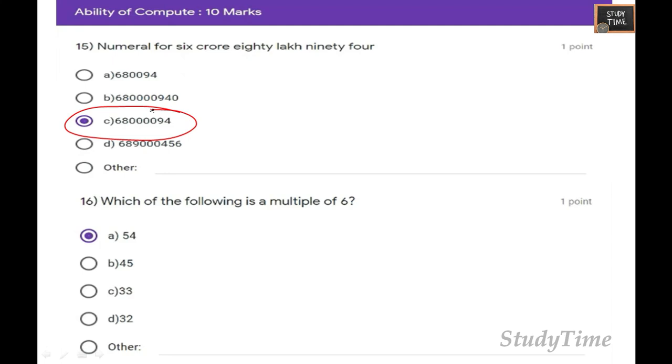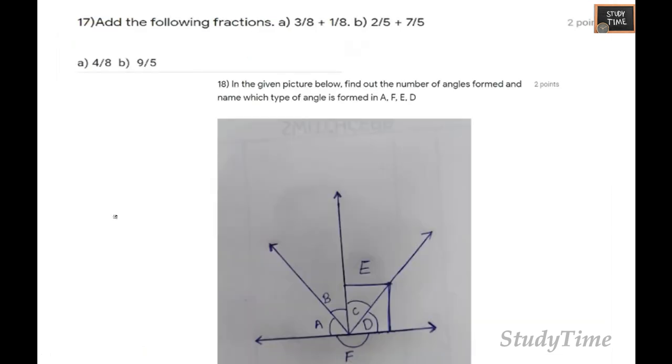Numeral of 46 crore 80 lakh 94: the answer is this. Which of the following is a multiple of 6? Multiple of 6 is in the 6 table: 12, 18, 24, 30, 36, 42, 48, 54, 60. The answer is 54.